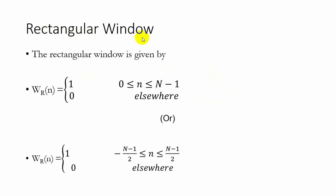The rectangular window function is given by w_r of n which is equal to 1 if n ranges between 0 to n-1, 0 elsewhere.